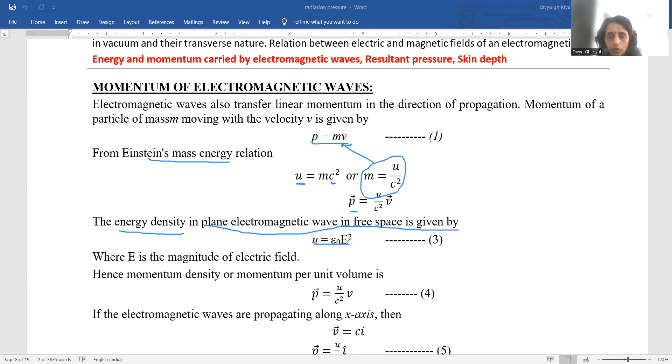So what are we going to now do? We will use this expression above. Momentum per unit volume is given by u divided by c square into v.